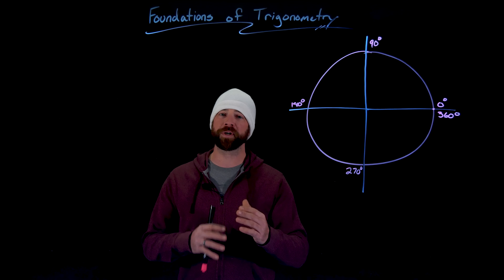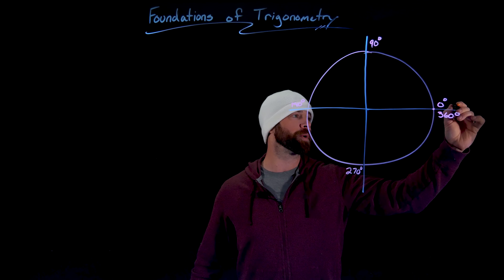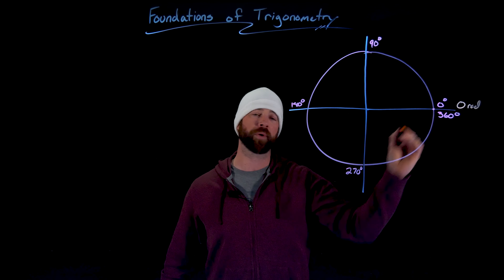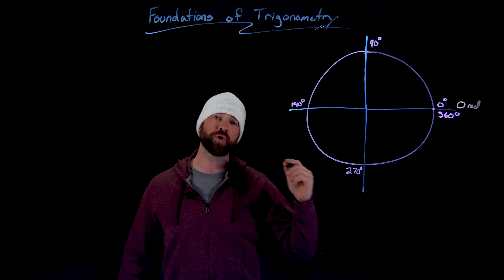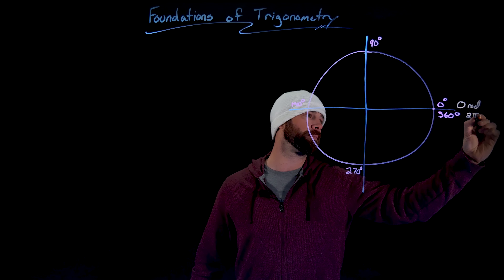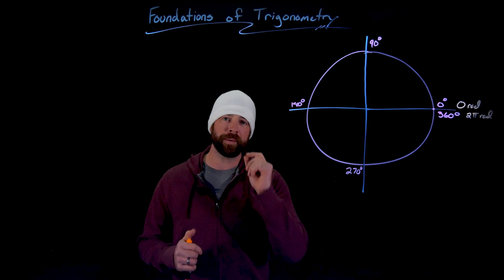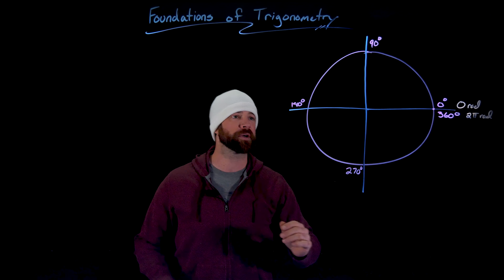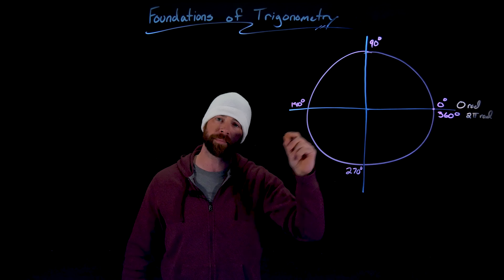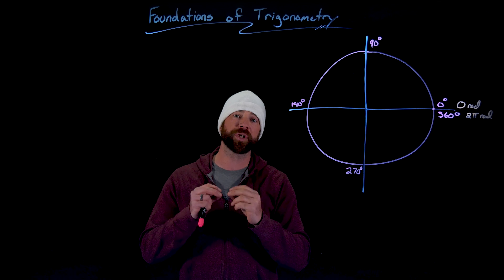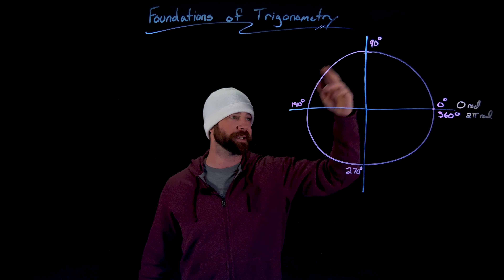Radians are extremely useful in mathematics, specifically when we get to calculus, because of their simplicity. We have zero radians being the same as zero degrees — it starts here at this point. For radians, it's defined such that if we go all the way around the circle, we've completed two pi radians. If this is the first time you've seen radians, it's going to feel a little different, but remember the whole concept is based on a full circle.